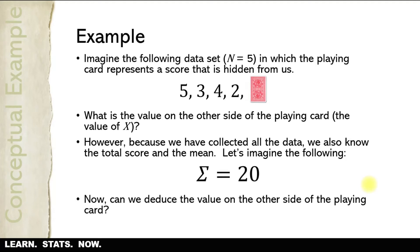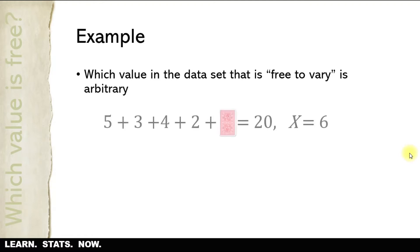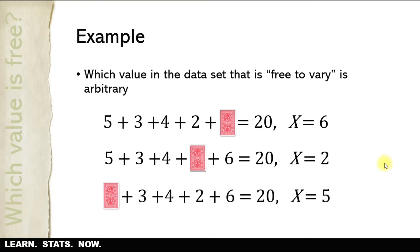Can we deduce the value on the other side of the playing card? Sure — if I add together the values we clearly observe: five plus three plus three plus four plus two, I get 14. Subtracting that from 20 tells me x equals six. Now, which value in our sample is the one that's free to vary is arbitrary. I put the card over six, but I could have put it over the two, in which case x would equal two, or over the five, in which case x equals five. In all these cases the sum remains the same.